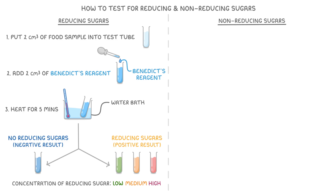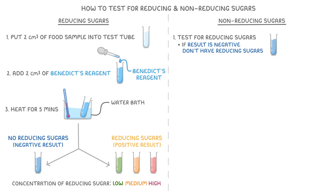Moving on to non-reducing sugars, these don't react with Benedict's reagent directly, so to test for these types of sugars you first need to do the test for reducing sugars. If the result is negative — meaning the solution stays blue and we don't have any reducing sugars — we need to carry out a few more steps to figure out if the food sample contains non-reducing sugars instead.